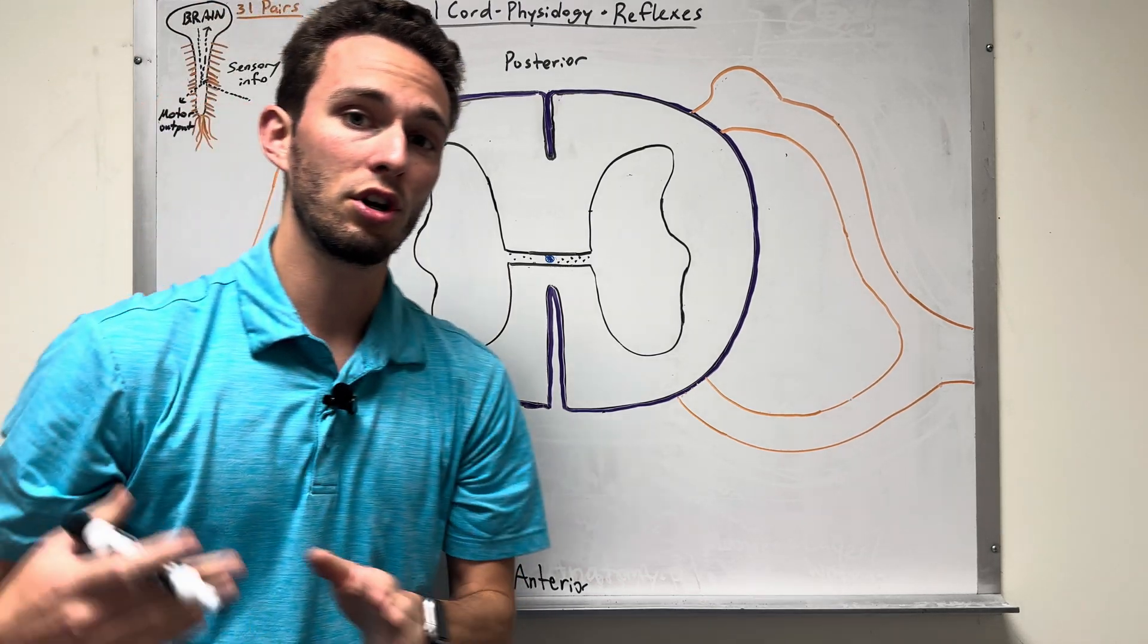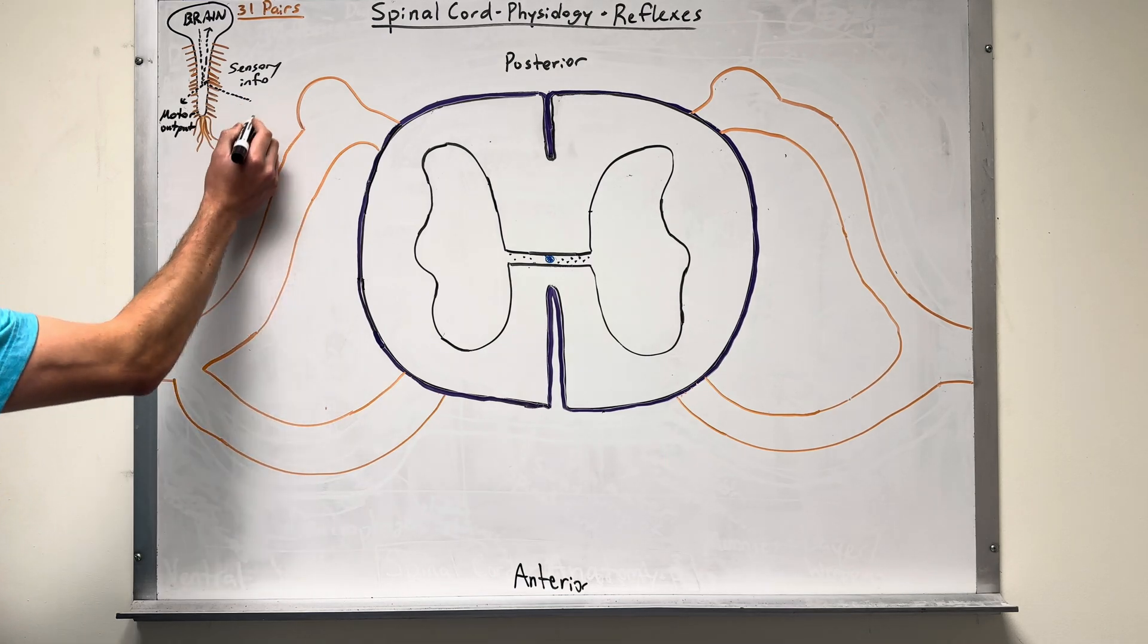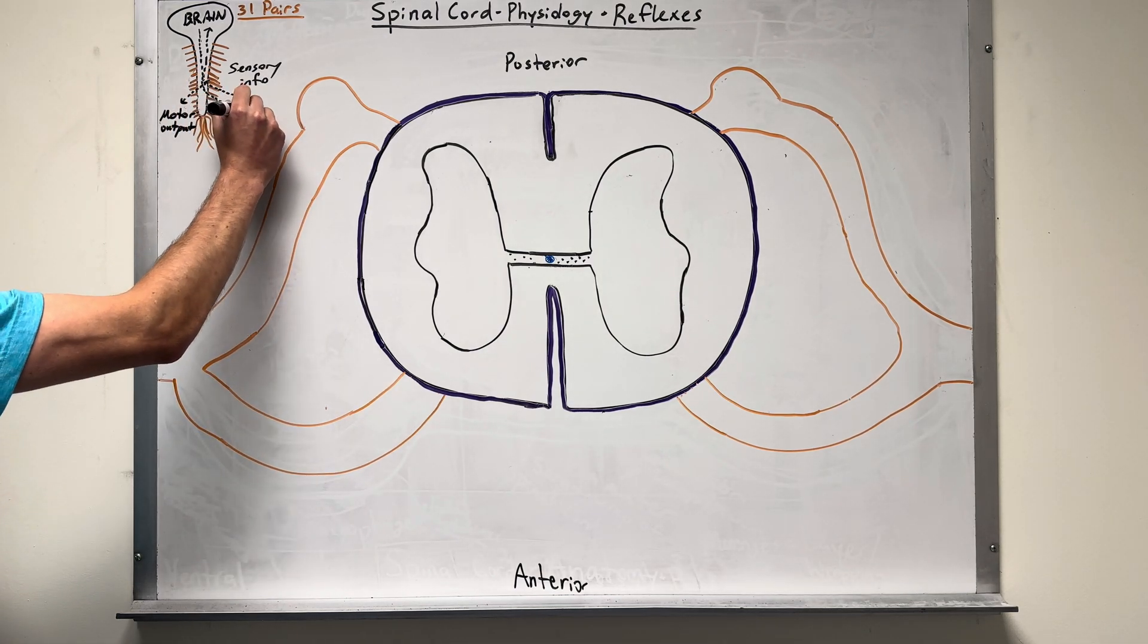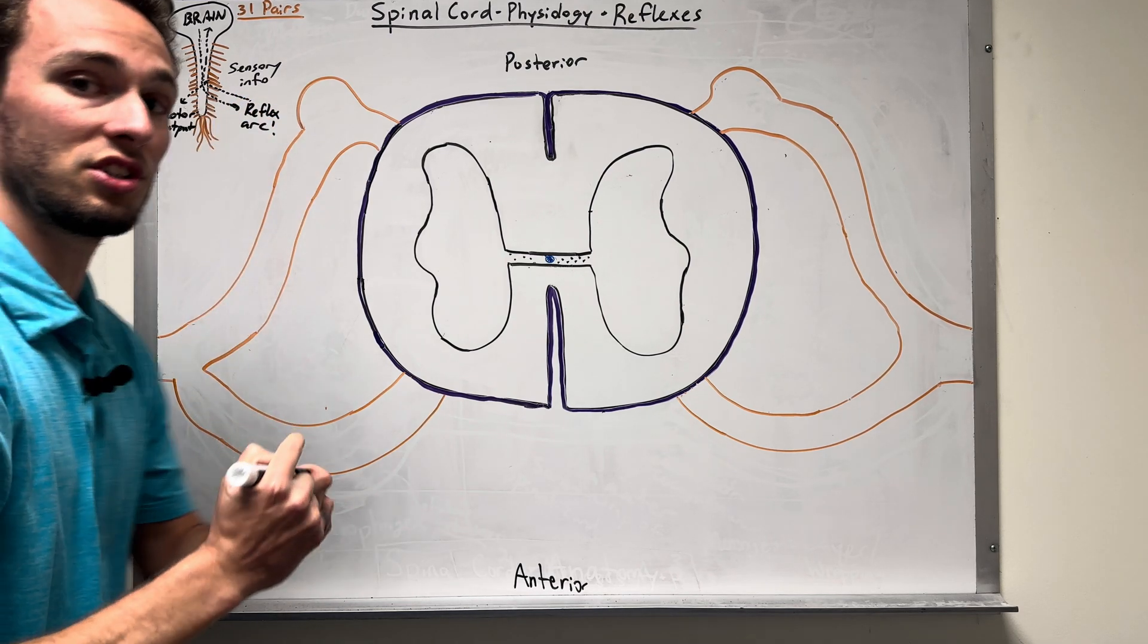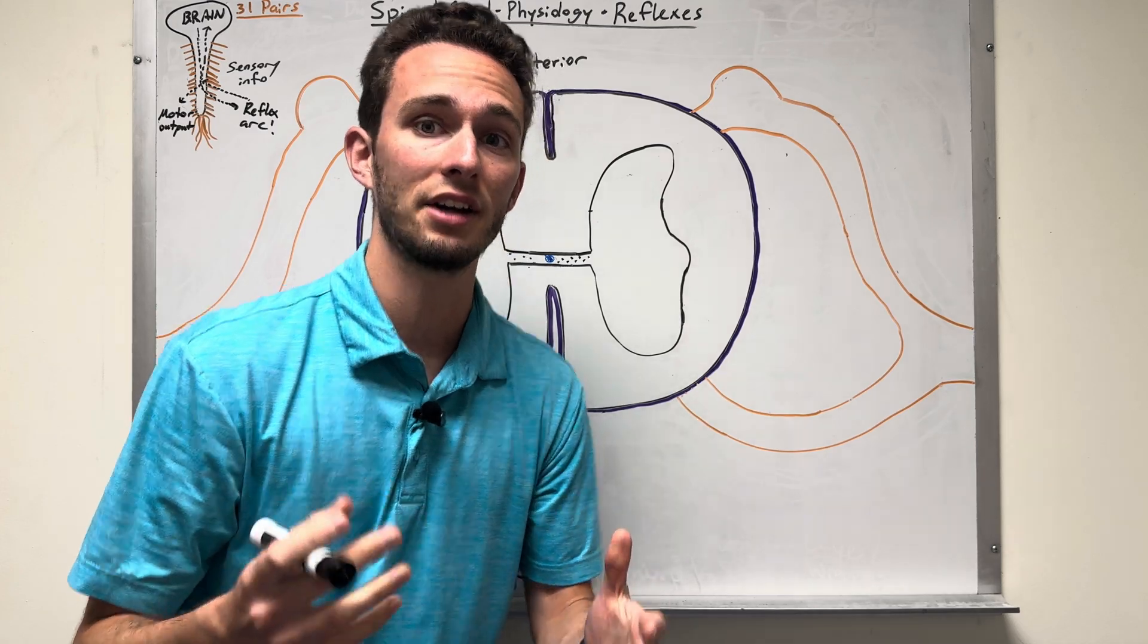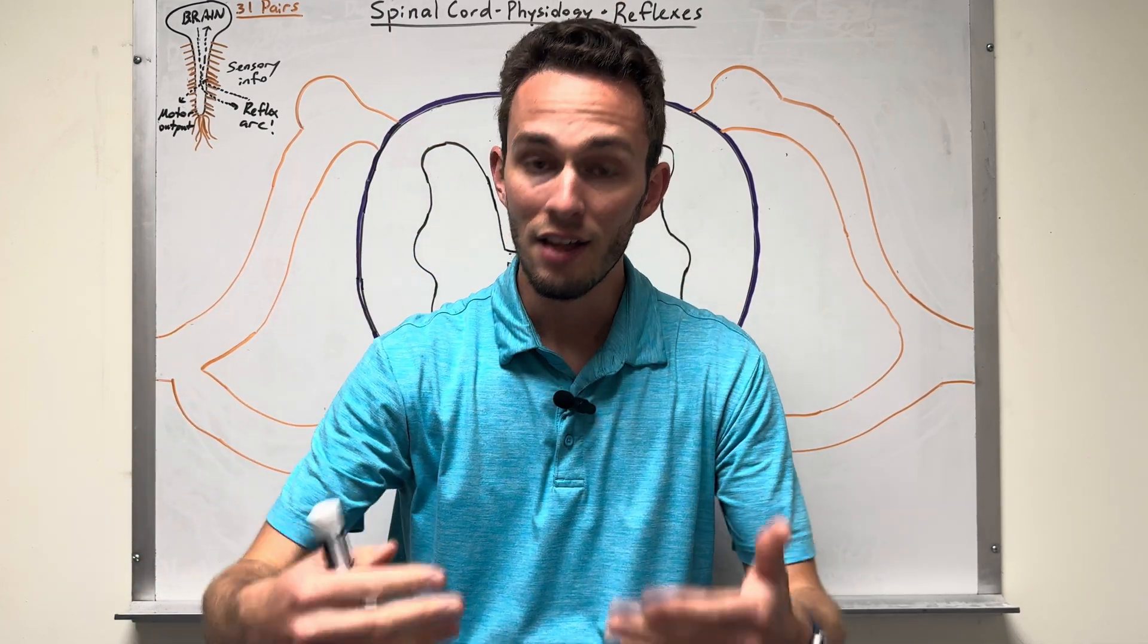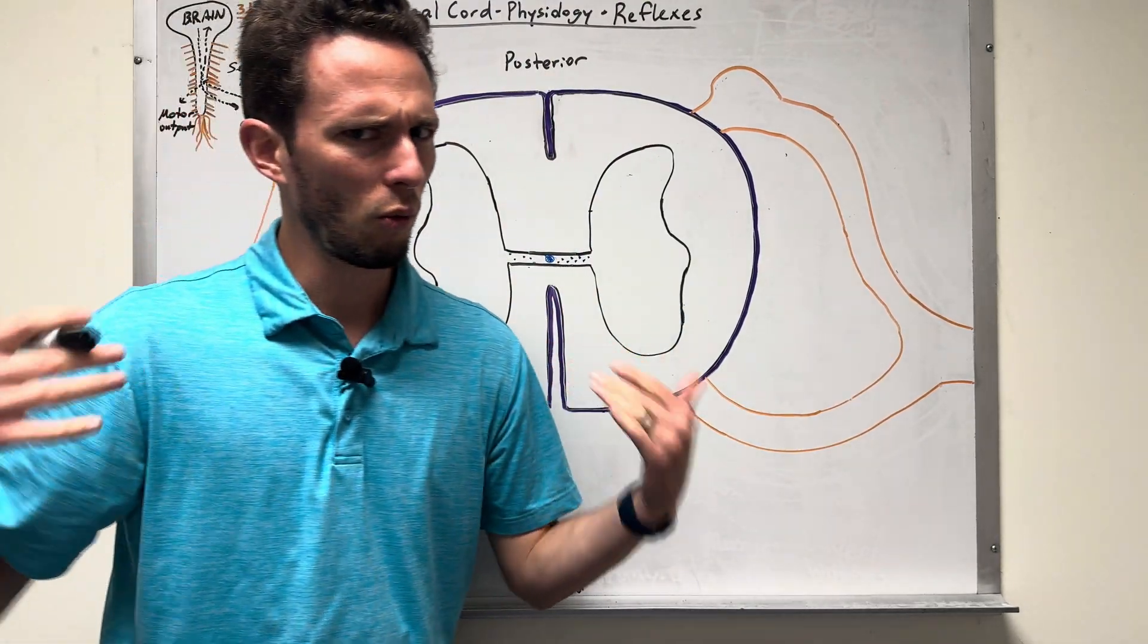But we can also go in and directly out. If we have sensory information coming in and go directly out, that is actually called a reflex arc. A reflex arc where you're basically doing something automatically. We've all been to the doctor, they tap our knee and our knee kicks out reflexively. That is a reflex coordinated by the spinal cord. But how does that all work?